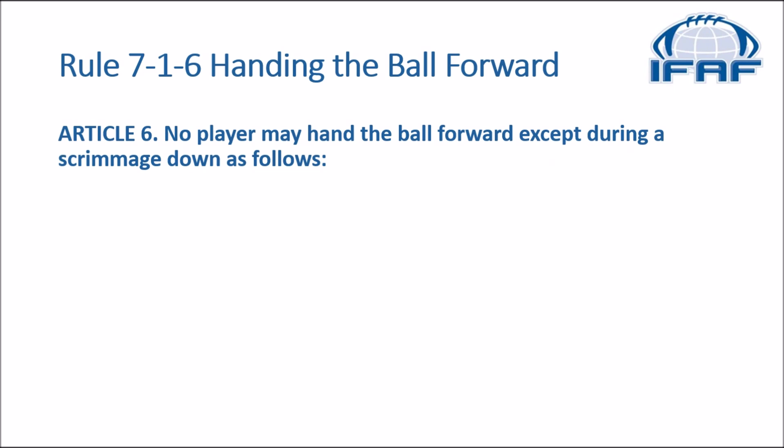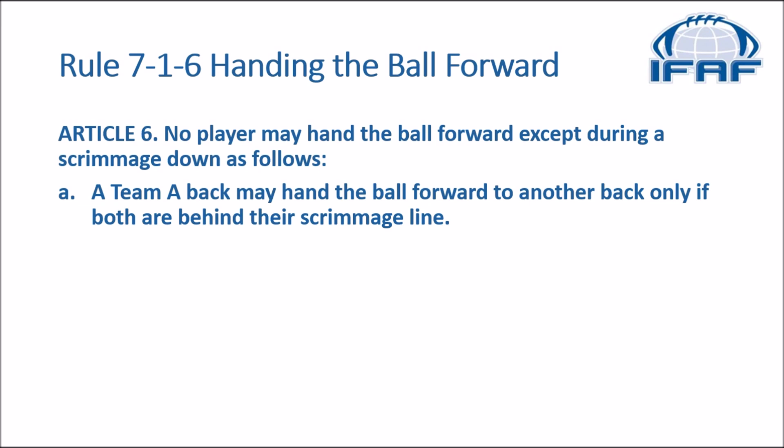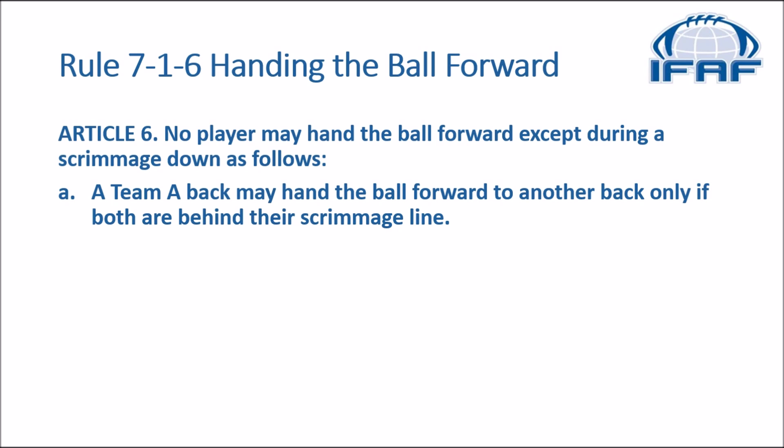In rule 716, no player may hand the ball forward except during a scrimmage down as follows: a teammate back may hand the ball forward to another back only if both are behind their scrimmage line; a teammate back behind his scrimmage line may hand the ball forward to a teammate who is on his scrimmage line at the snap, provided that teammate leaves his line position by a movement of both feet that faces him towards his own end line and is at least two yards behind his scrimmage line when he receives the ball.